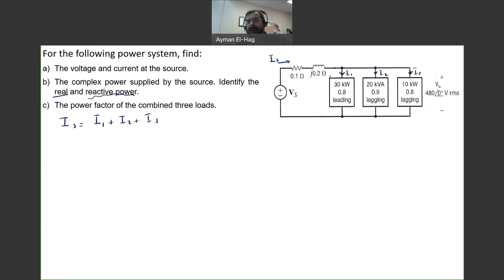So let's calculate I1. What do we know about I1? We have the power, we have the power factor, and we have the voltage. So from this, I1 is equal to the power divided by the voltage times the power factor. And this is I1 as a magnitude. This is equal to 30 times 10 to the power of 3 divided by the voltage, which is 480, times the 0.8. And this will give me a current equal to 78.1 amps. Now, since we work in phasors, the magnitude only is not sufficient. We need to find the angle.